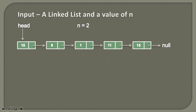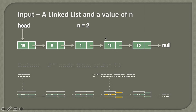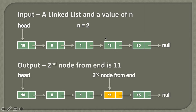Given a linked list and a value of n, we need to find the nth node from the end of the list. Suppose this is a linked list having the nodes as 10, 8, 1, 11, and 15. There are total five nodes and the given value of n is equal to two. So it means we have to find the second node from the end of the list, which is 11.